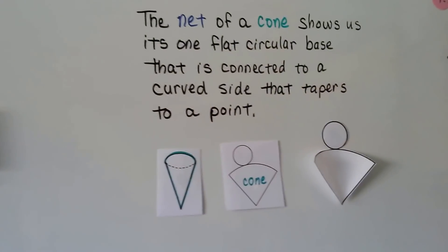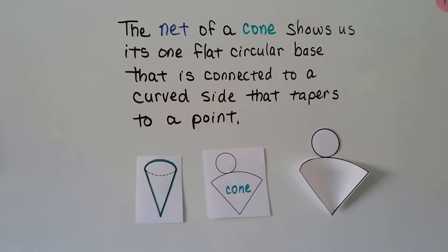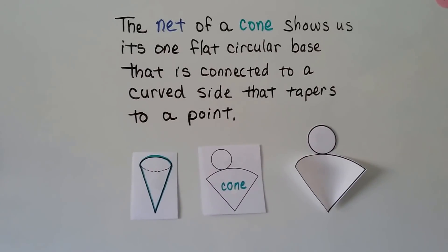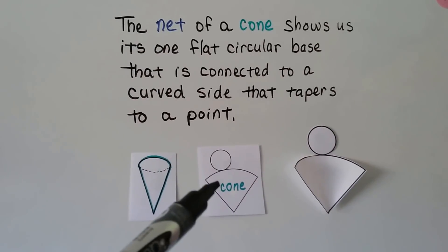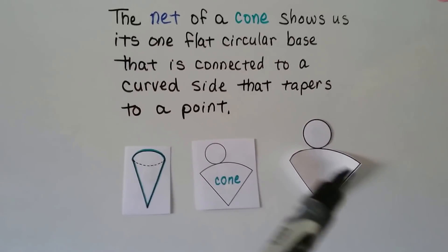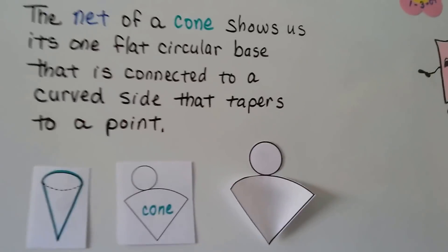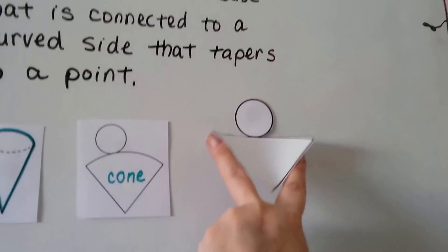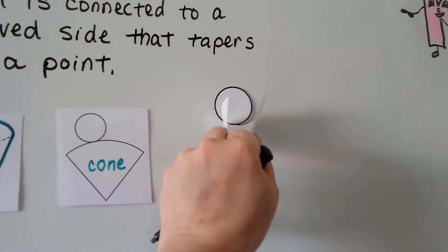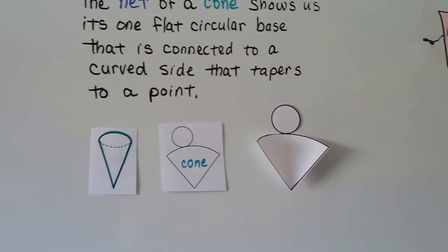The net of a cone shows us its one flat circular base that's connected to a curved side that tapers to a point. So we can cut this out, and we can curve this and tape it together to make the cone. That's the circular base.